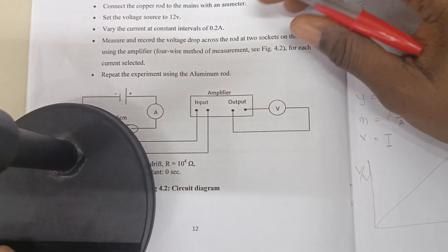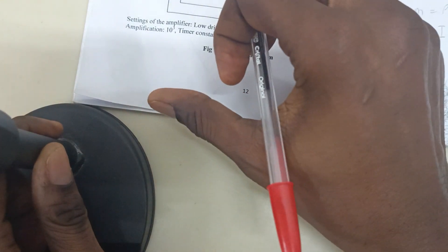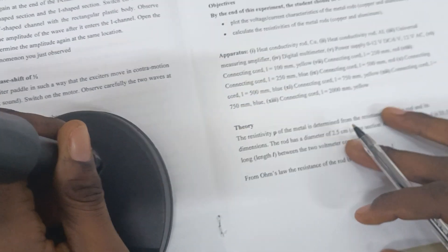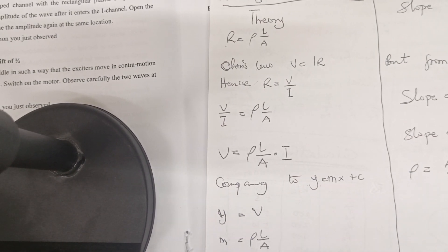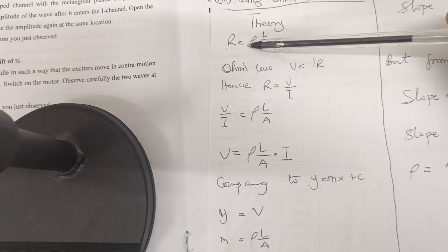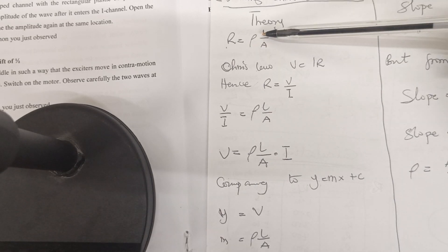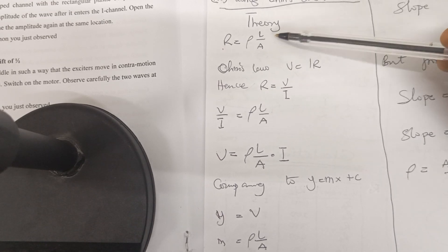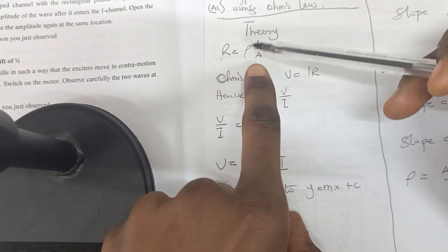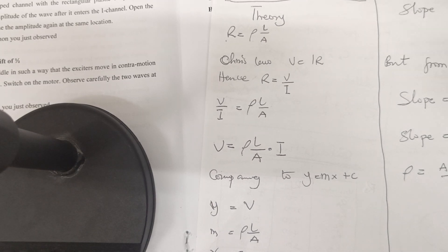We're using an amplifier, and the settings for the amp will be done for you in the lab. After you've taken your values, let's look at the theory behind the experiment — how to find resistivity. The resistance of a material or metal depends on three things: one, the length; two, the resistivity; and three, the area. Since we are using Ohm's Law, V equals IR.